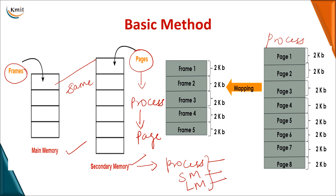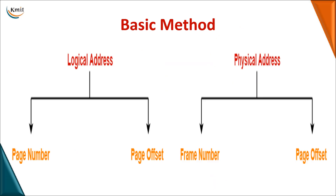Here the process is divided into 8 pages. For a process to be executed, it must be present in main memory. Main memory is divided into frames, meaning each page has to be loaded into a frame for its execution to take place.